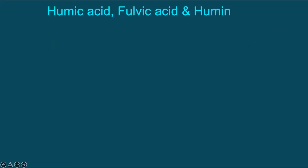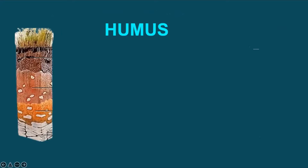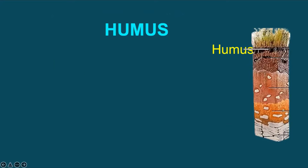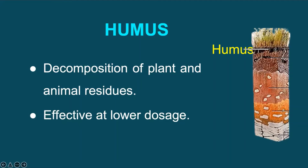Humic acid, fulvic acid, and humine are collectively referred to as humus. Humus, being an important ingredient of soil, is formed through the decomposition of organic matter, including plants and animal residues. It is so powerful that even small amounts can bring positive results. Soils devoid of humus are known as barren lands.